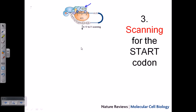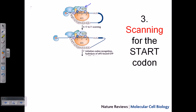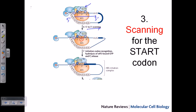Scanning begins and proceeds in the 5' to 3' direction along the mRNA. As scanning continues and the AUG codon is found, the fMet-tRNA is placed properly through hydrogen bonding between the codon and anticodon. Once they find the AUG, the fMet-tRNA pairs correctly with the AUG, completing the scanning of the start codon.